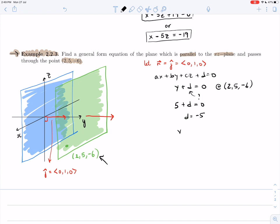So Y minus 5 equals 0 is a general form equation for the plane parallel to the Xz plane, passing through the point 2, 5, minus 6. Or probably more naturally, this equation would be given simply as Y equals 5.